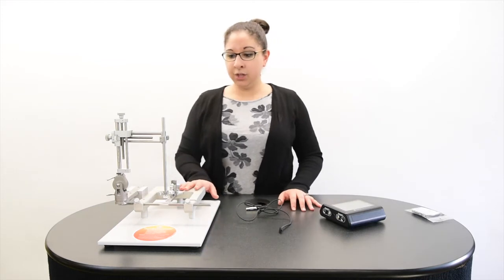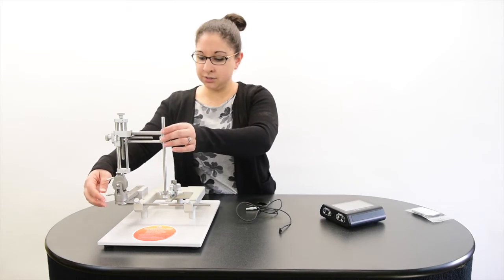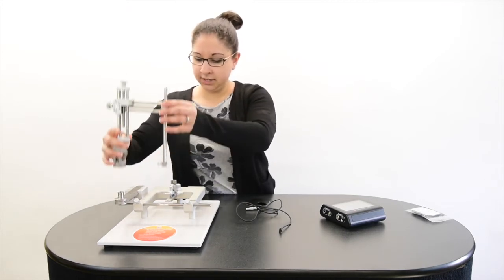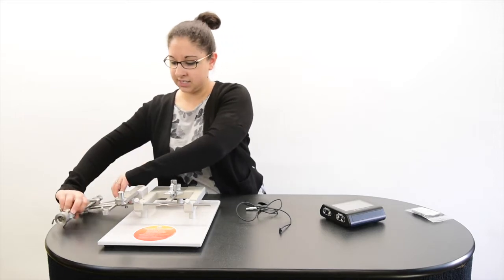So the first step involves the Stereotaxic. You will need to remove the manipulator arm off of the base. To do so, you just unscrew this right here and it lifts right off and you can set that to the side.